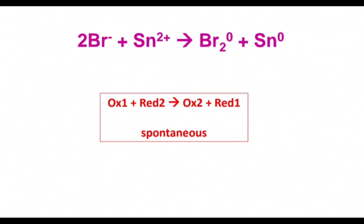Stannum takes two electrons, so he's reduced—it means he's an oxidizer and becomes stannum zero. We can see also the opposite way, the reverse reaction, when Br^0 becomes Br- and Sn^0 becomes Sn^2+.